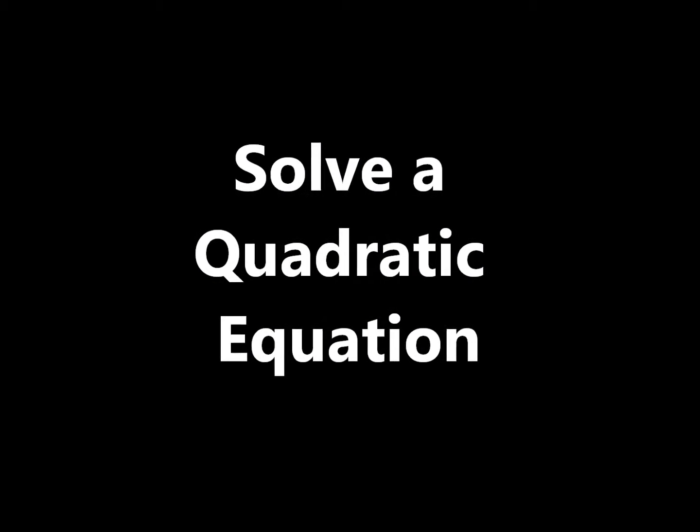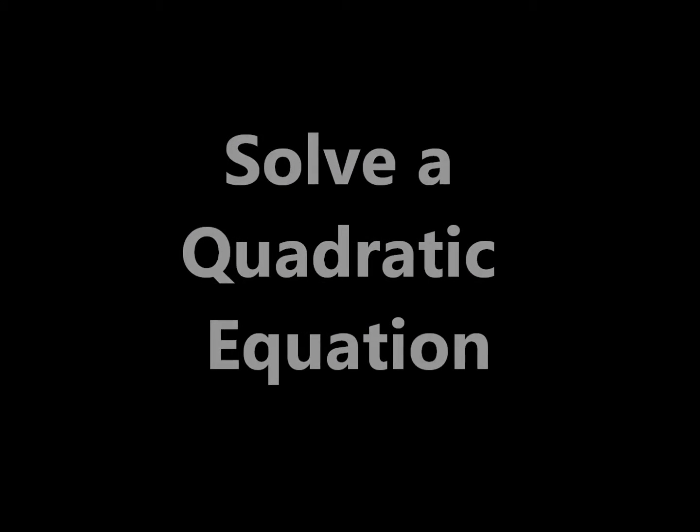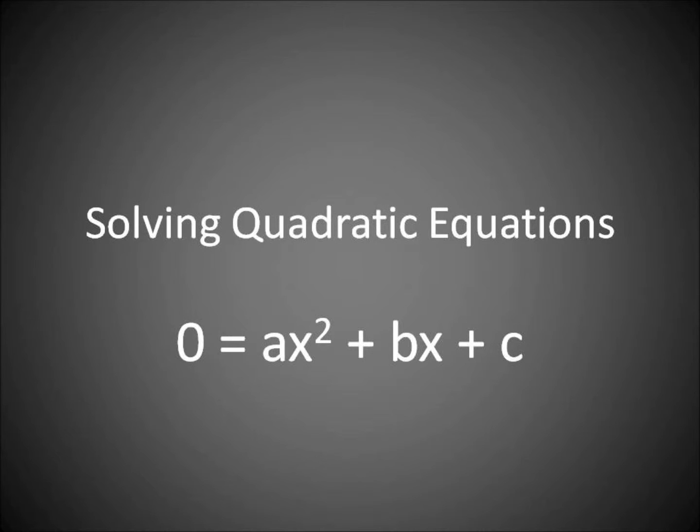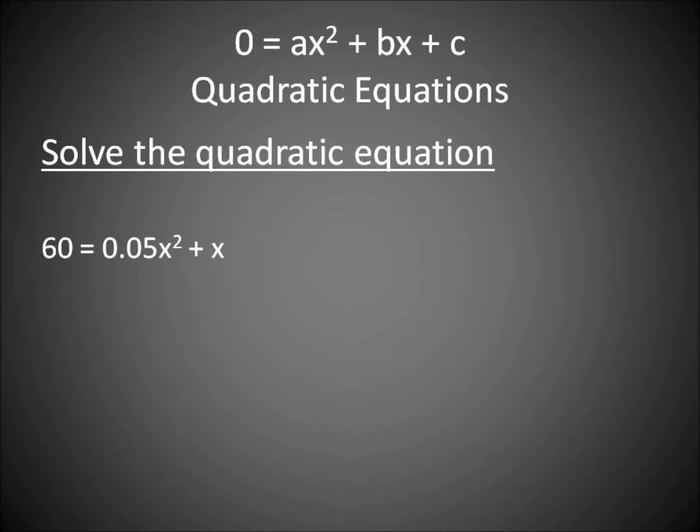Welcome to how to solve a quadratic equation. We're going to use zero equals ax squared plus bx plus c. The solutions of a quadratic equation of the form zero equals ax squared plus bx plus c are found where the graph of y equals ax squared plus bx plus c crosses the x-axis.